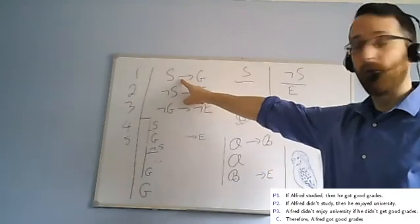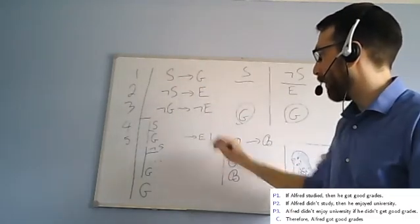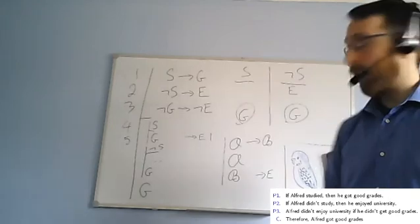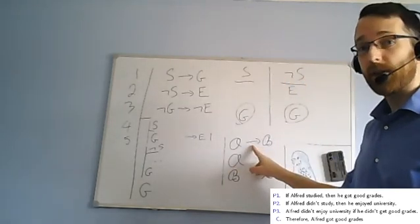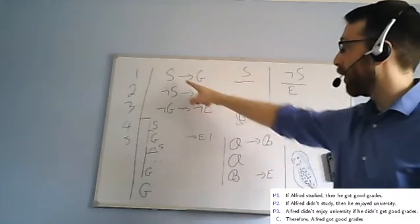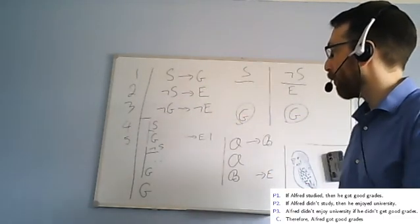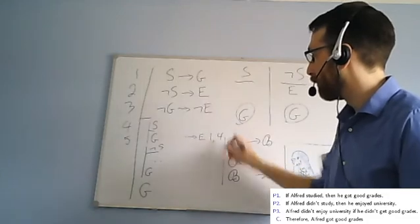And where do I see two sentences like the ones arrow elimination wants me to have? I see an arrow sentence on line one, so I'll write one. And the rule says I need two sentences, not just one. The arrow sentence by itself isn't enough. I also need to have its antecedent. Where do I have the antecedent? That is S on line four. So I write one comma four.